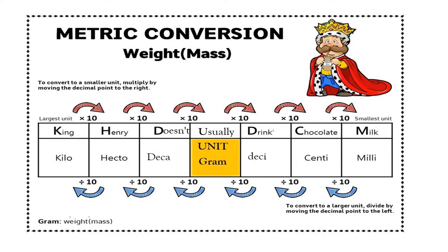We'll cover how to convert higher units into smaller units and smaller units into bigger units. Hope you remember the mnemonic: King Henry Does Not Usually Drink Chocolate Milk. K means kilo, H means hecto, D means deca, U means the basic unit — meter for length, gram for weight, liters for volume — D for deci, C for centi, and M for milli. This mnemonic will help you in the conversions.